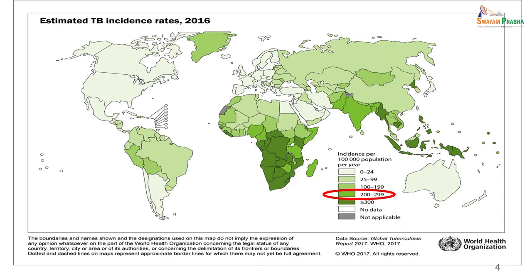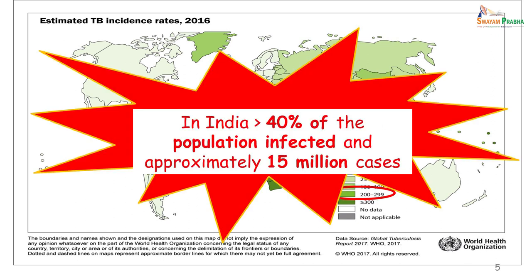The estimated TB incidence rates — this is a 2016 map from WHO — indicates that India has an incidence of 200 to 299 cases per 100,000 population. If we break it up, it means that 40% of our population is infected and approximately there are 15 million cases of TB in our country. You would agree that is a very, very large number.